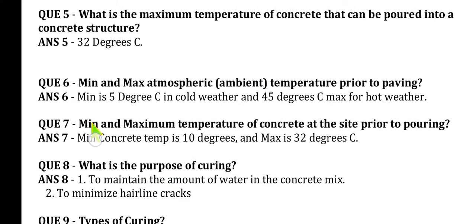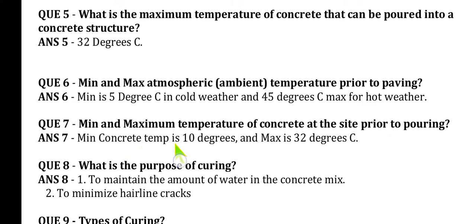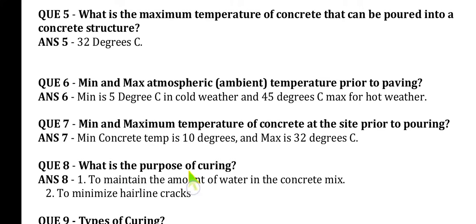Question 7: What are the minimum and maximum temperatures of concrete at the site prior to pouring? Minimum temperature is 10 degrees centigrade and maximum temperature is 32 degrees centigrade.